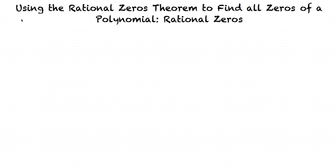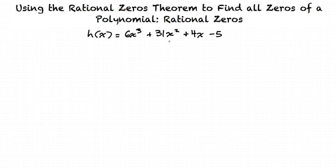This video will cover the topic of using the Rational Zeros Theorem to find all zeros of a polynomial. Let's look at the function h of x equals 6x cubed plus 31x squared plus 4x minus 5. Our goal for this problem is to use the Rational Zeros Theorem to find all the zeros. This function has at least one rational zero, and we need to use this fact to find all the zeros of the function.